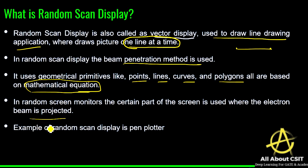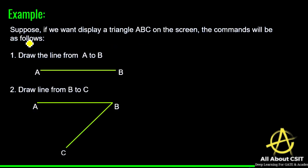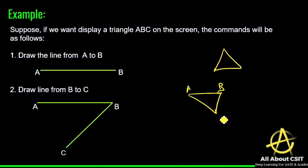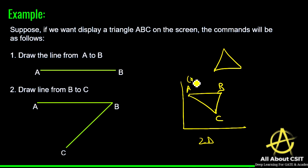An example of random scan display is a pen plotter. Suppose you want to draw a triangle ABC on screen. On a 2D x-y axis, A, B, and C each have x-y coordinates. Whenever the x-y coordinates are defined, you are able to draw a line one at a time.